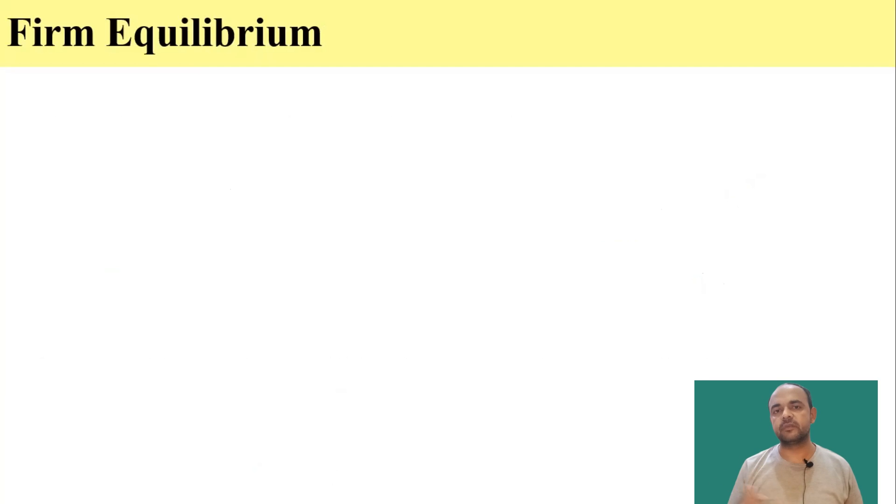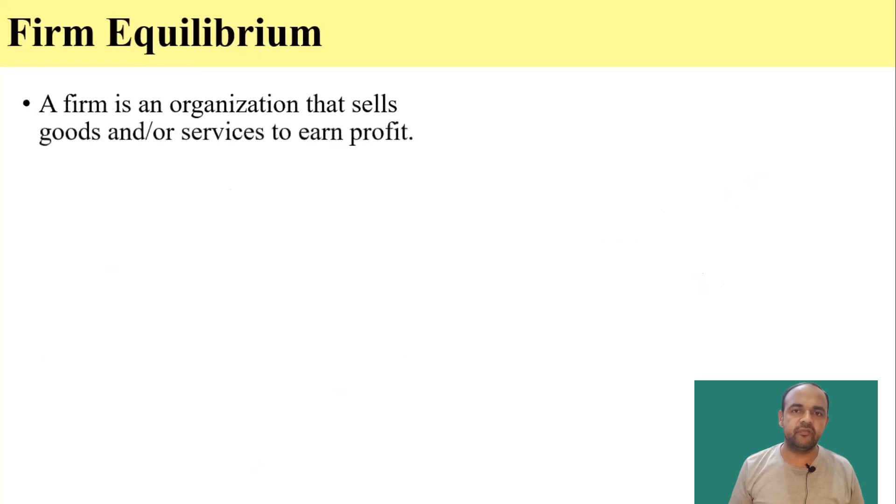Now, let's move to firm equilibrium. A firm is an organization that sells goods and services to earn the profit. And we know that the profit is the difference between revenue and cost. The motive of the firm is to earn profit.